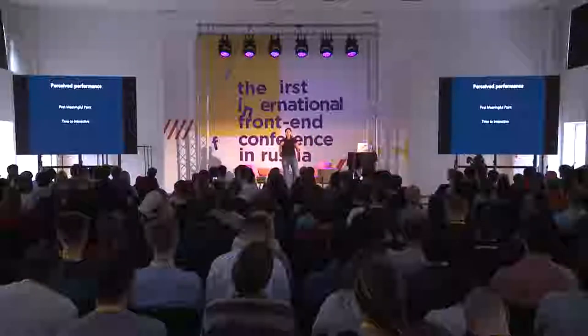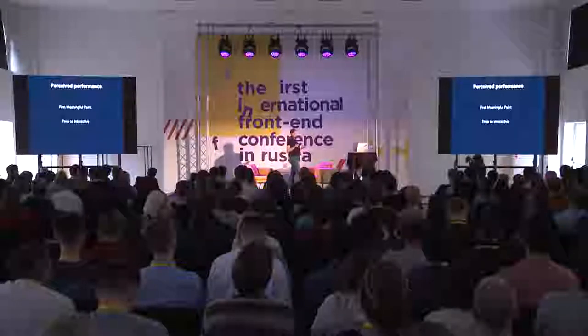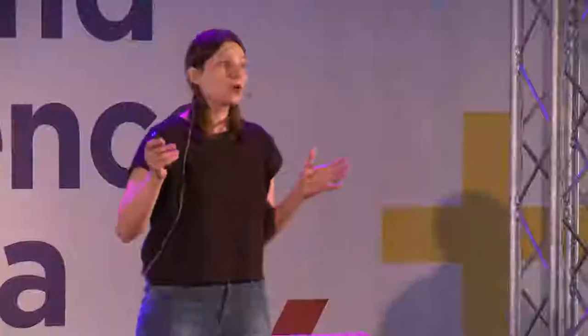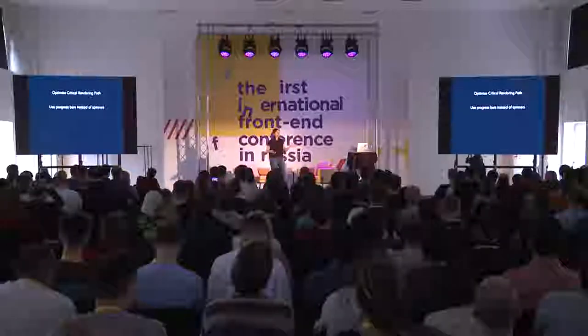While there is no single definition if you search for perceived performance in regard to web technologies, you would probably associate this term with things like first meaningful paint and time to interactive. First meaningful paint means you want to show the user something as fast as possible. Time to interactive means you want the user to be able to interact with what is painted to screen as fast as possible. And if you searched further, you would find things like how to optimize the critical path.